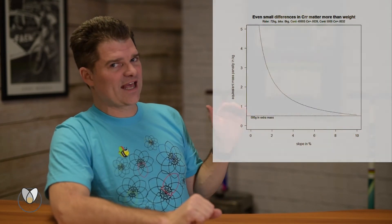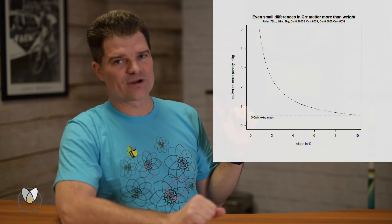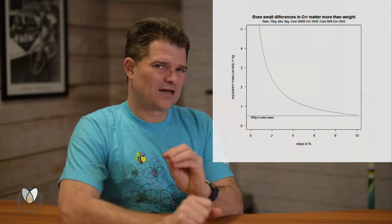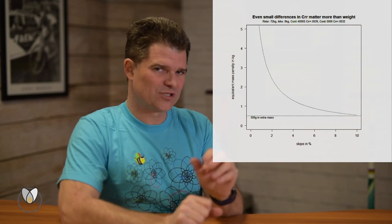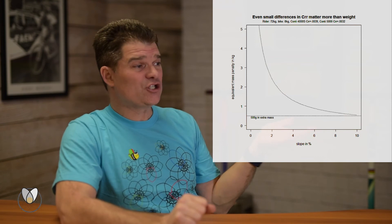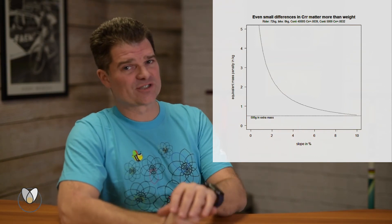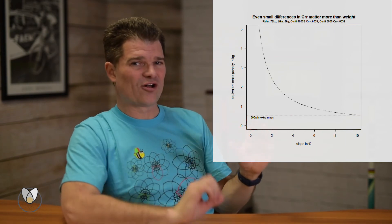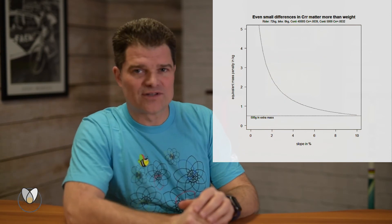This is an awesome thing that our good friend Robert Chung threw together. If you have not listened to the Robert Chung interview at the Marginal Gains podcast, you absolutely have to — it's a phenomenal episode; he is such a brilliant and wonderful person. Robert put this together for us and it is just so illustrative of the power of these coefficients. This chart compares a Continental GP4000 to a Continental GP5000, both with latex tubes, and then compares them to mass at various slopes.